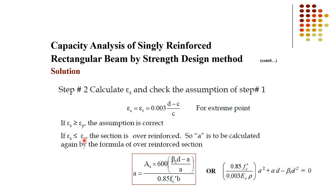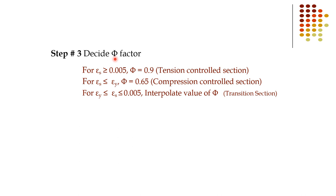If the strain in steel is less than the yield strain, the section is over-reinforced and A must be recalculated using the over-reinforced formula. In that formula, A appears on both sides; after simplification, you get a quadratic equation. Solving the quadratic equation gives the new value of A for the over-reinforced method.